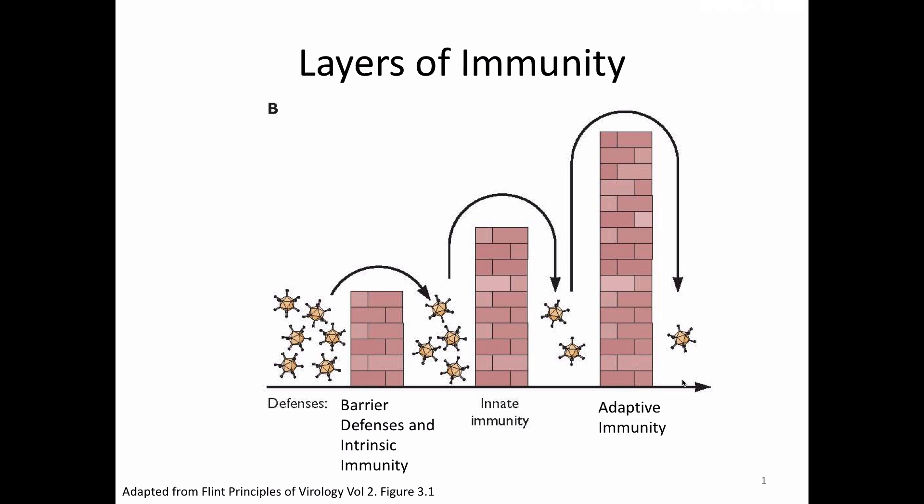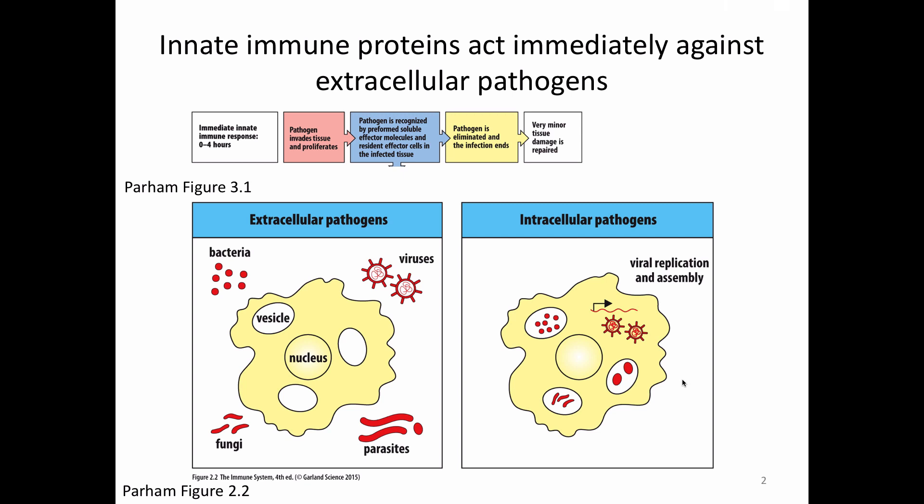Just like any other part of the immune system, we can further divide up the innate response. At the very top is the immediate innate immune response—the response happening within about the first four hours following pathogen infection. During that time, the pathogen can be recognized by preformed proteins that are able to combat that microbe. The key part is 'preformed': these are proteins already present and ready to go, requiring no prep time whatsoever.